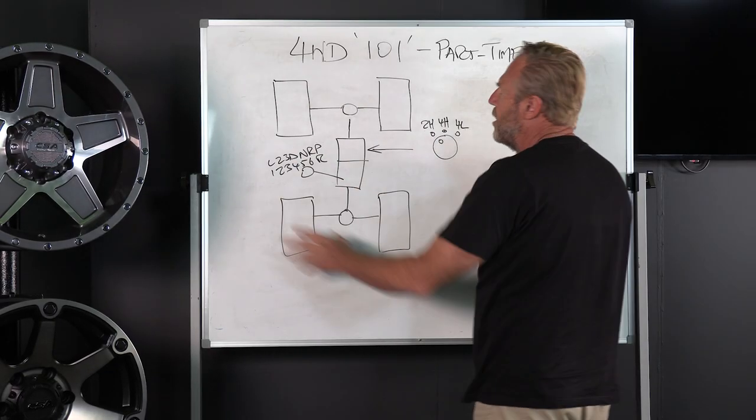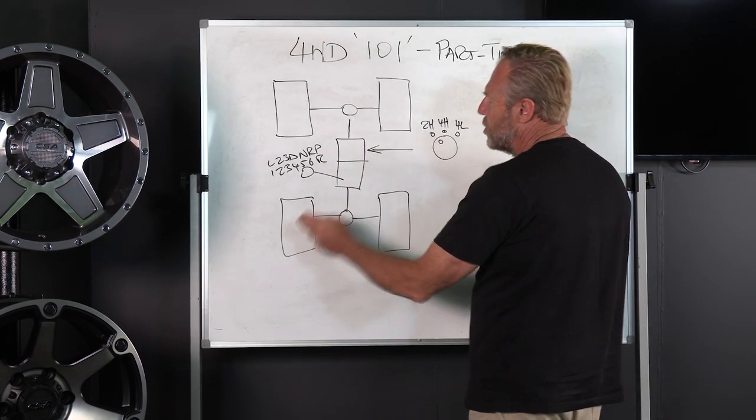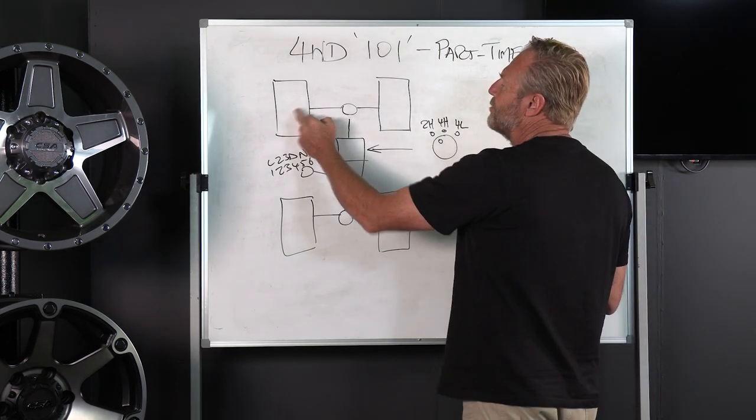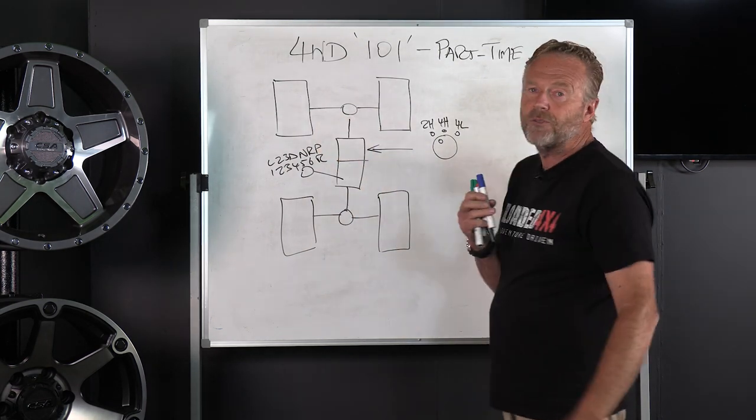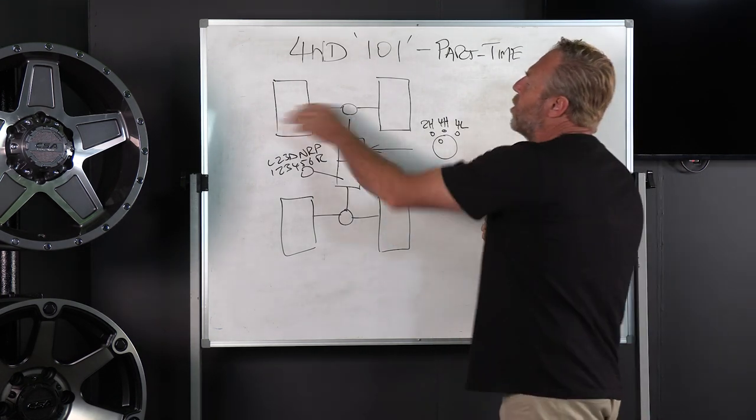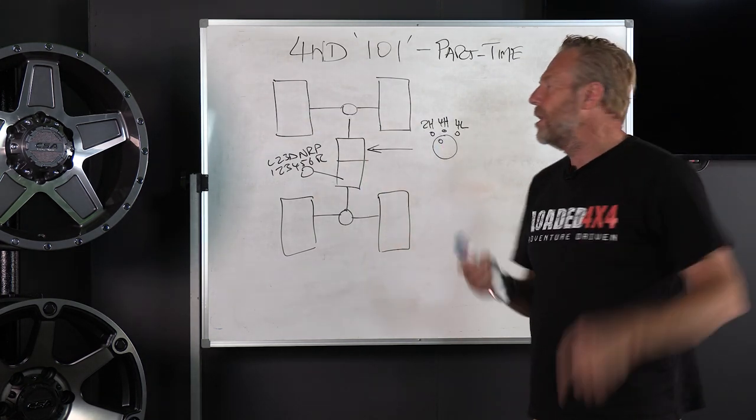If we look at the driveline, we've got a wheel in each corner. The modern idiom with a part-time 4WD is to have the front wheels in permanent connect to the front axles and the differential, so every time you drive down the road all that componentry is turning over.